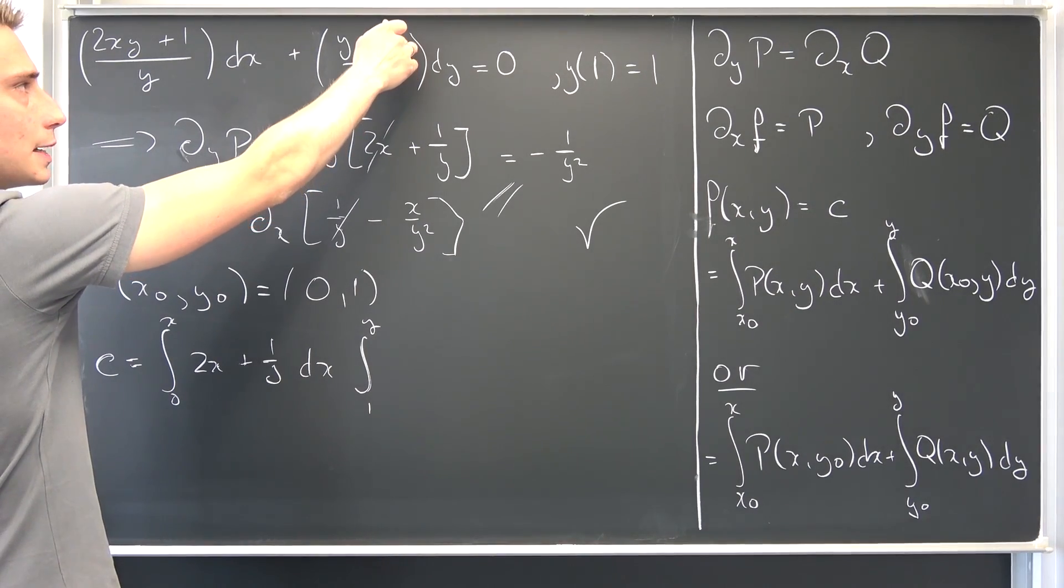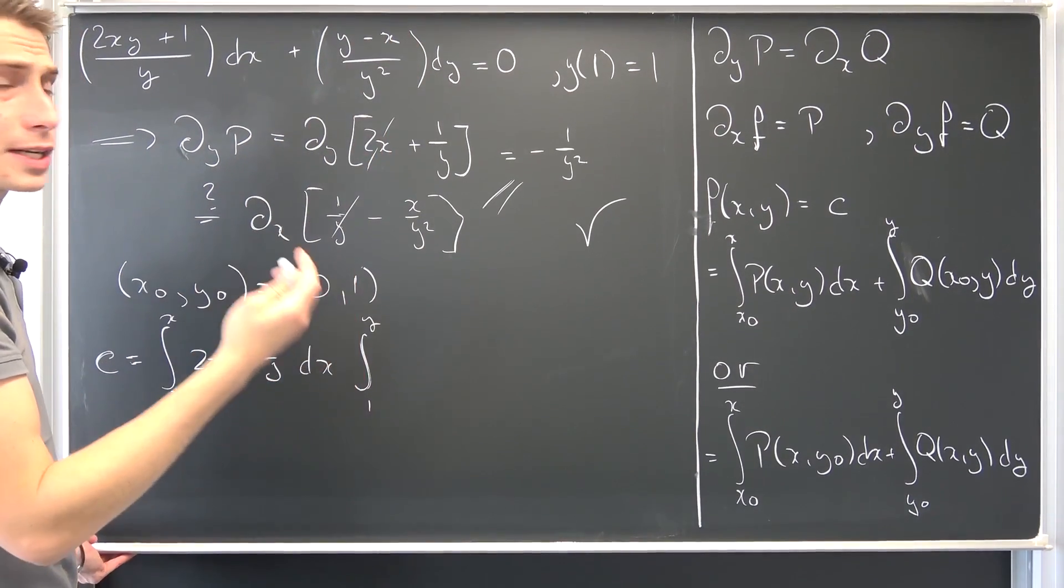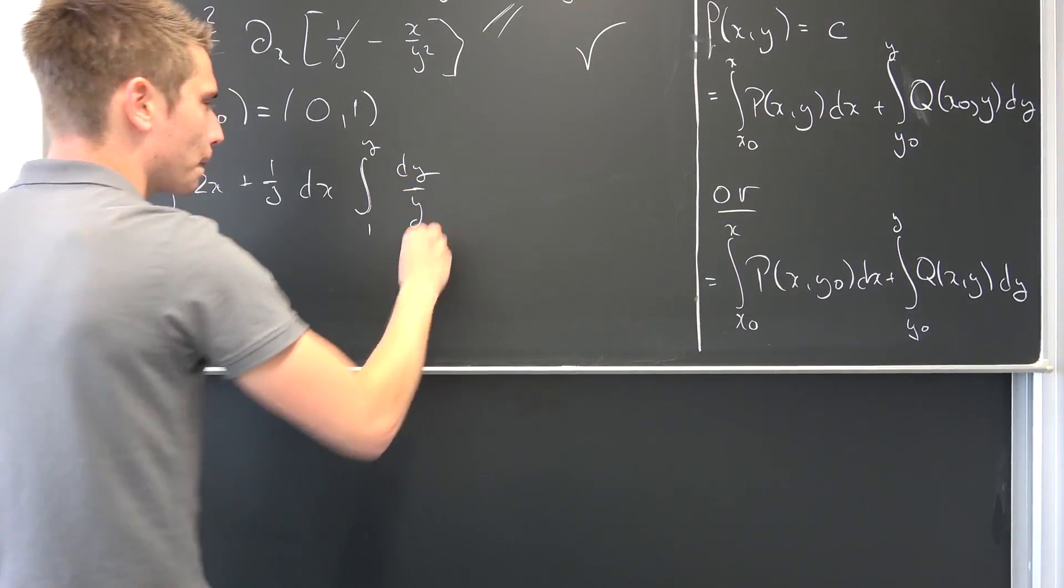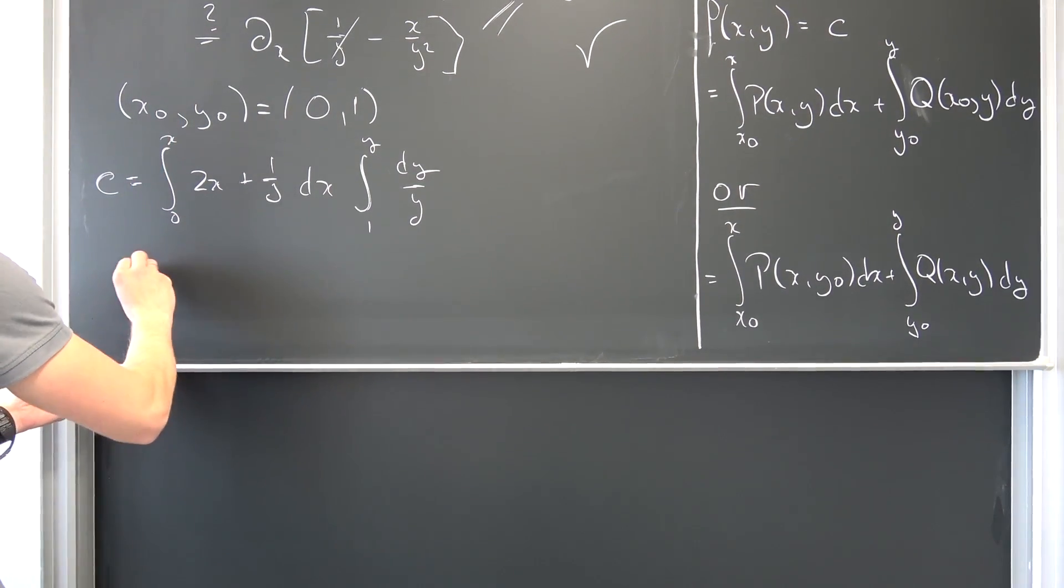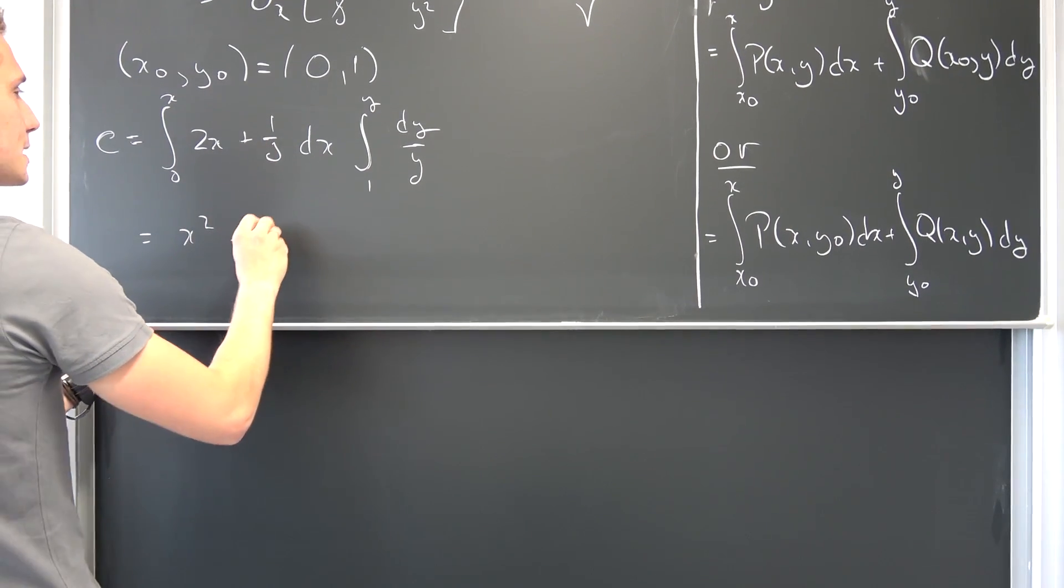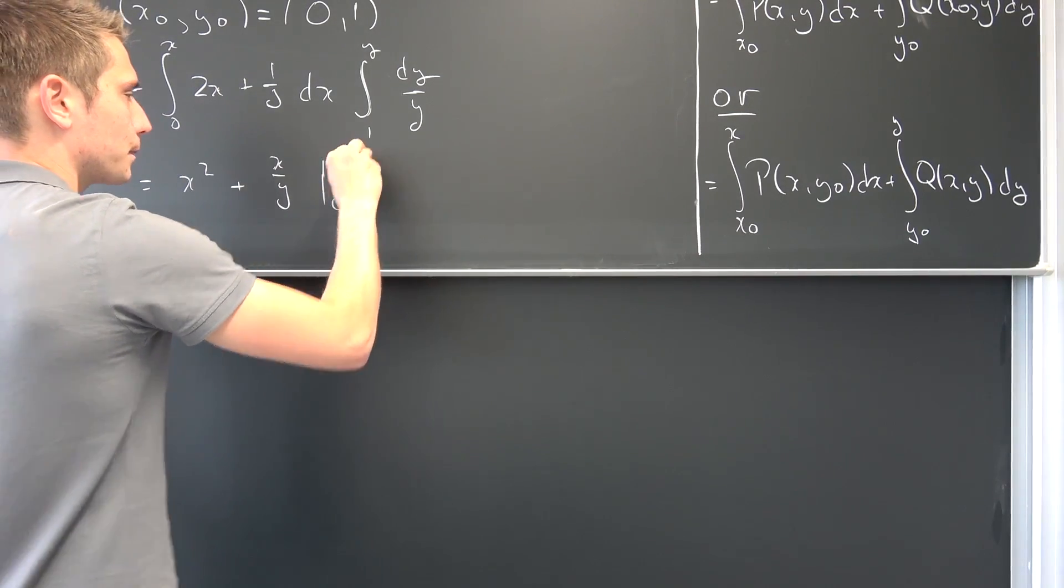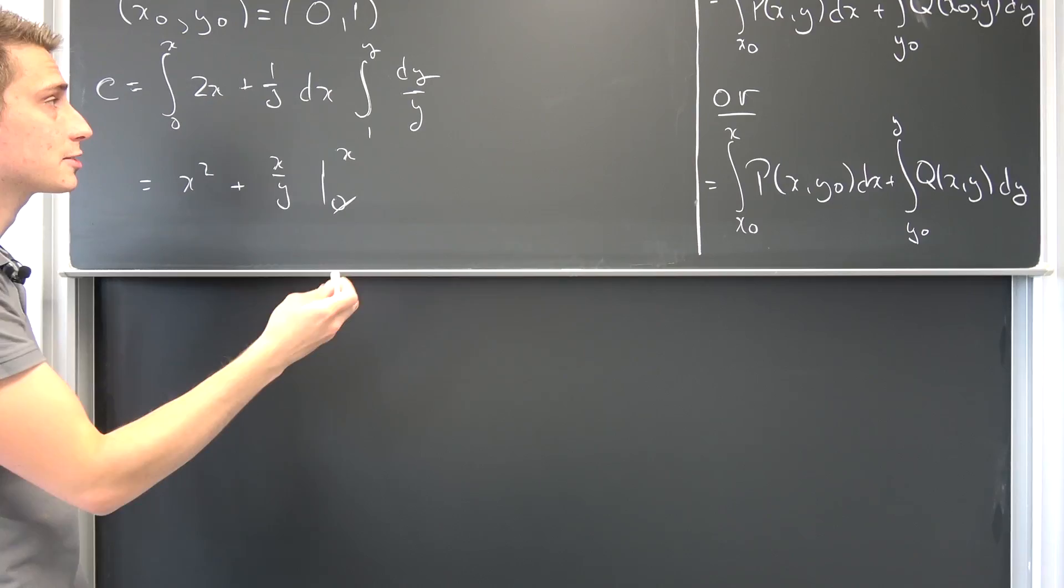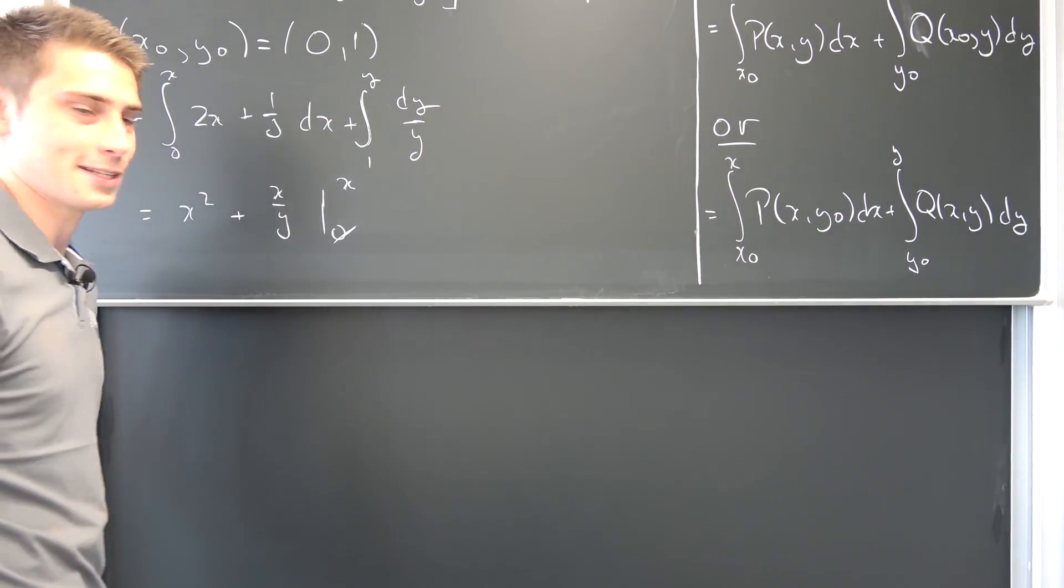x₀ is going to make this part vanish the second part, leaving us with y over y squared, which is nothing but 1/y. Now integrating this is really easy, so this is going to leave us with x² over 2 times 2, which is nothing but x² plus x/y, plus x/y from 0 to x. Once again, on 0 it's going to vanish. I hope you can see this. On x we just plug x into here, and also I forgot the plus sign. That's something important.